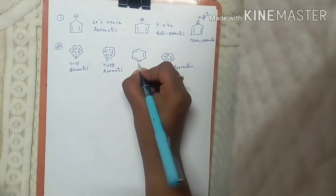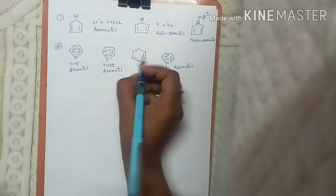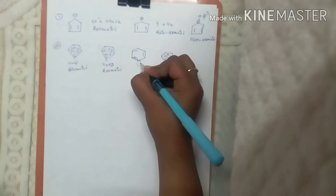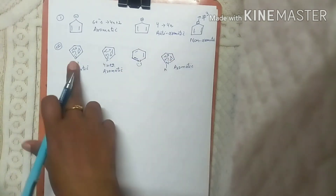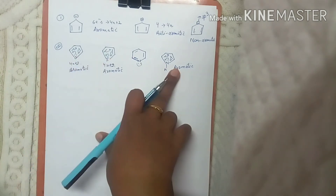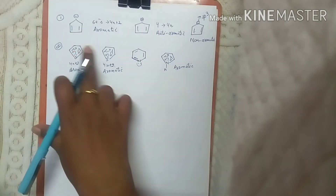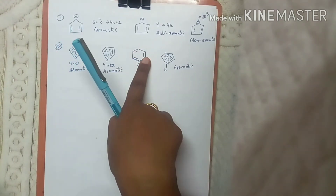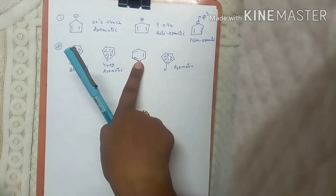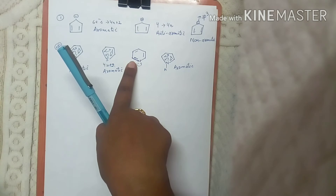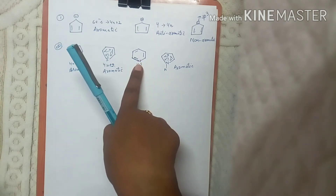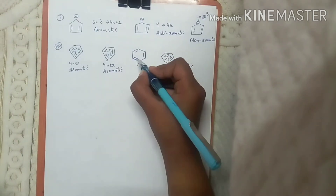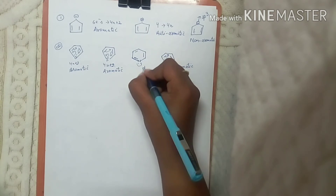Remember: whenever there is a lone pair on an atom in a cyclic ring and a double bond is present with that heteroatom, the lone pair is not donated into the ring for resonance. In the cases of furan, thiophene, and pyridine the lone pairs are donated. But when a heteroatom has a corresponding unsaturation, that heteroatom will not donate its electrons for resonance. So those electrons will not be counted — there are still six electrons, making it aromatic.